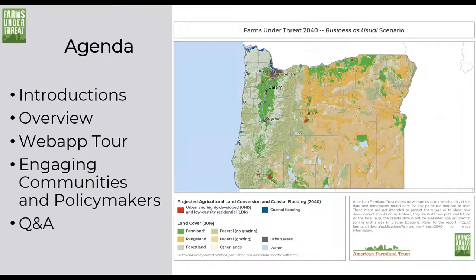Everyone has been muted, so don't worry about your own background noise. If you would like to ask a question or make a comment, you can do so by going to the control panel on the right-hand side of your screen. At the top, you see an orange arrow. If you click on that, it minimizes the control panel. In that control panel, you will see a questions tab where you can put your questions or comments. We will have a period at the end of the webinar to take questions. You'll also see a handouts section with two items — the full Farms Under Threat 2040 report and the Oregon State summary.